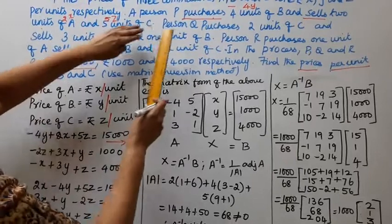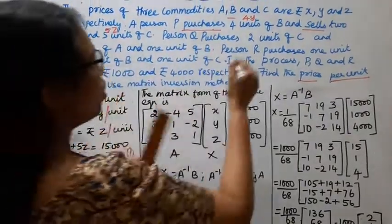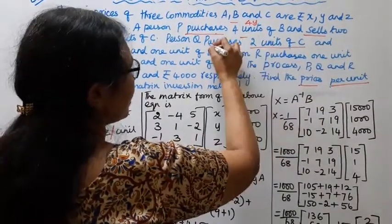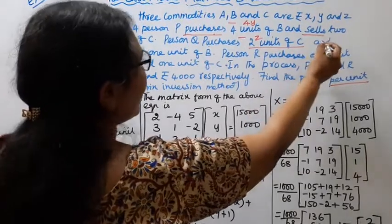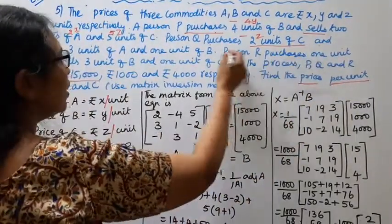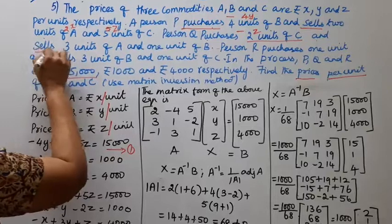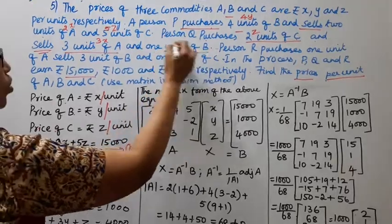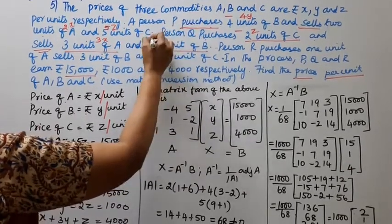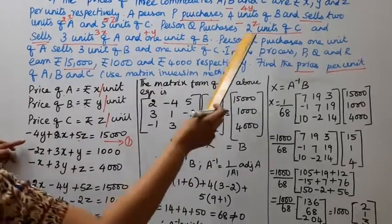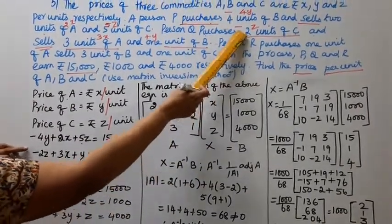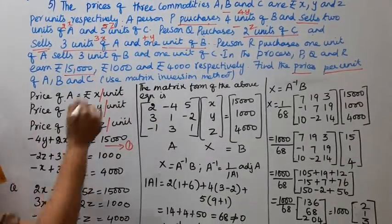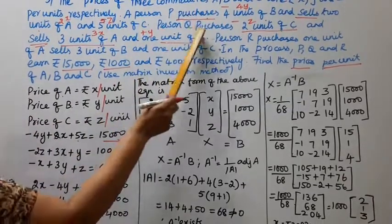First, the person Q purchases 2 units of C. Purchases, minus 2Z, C and cells, sells 3 units of A, 3X and 1 unit of B, plus Y.